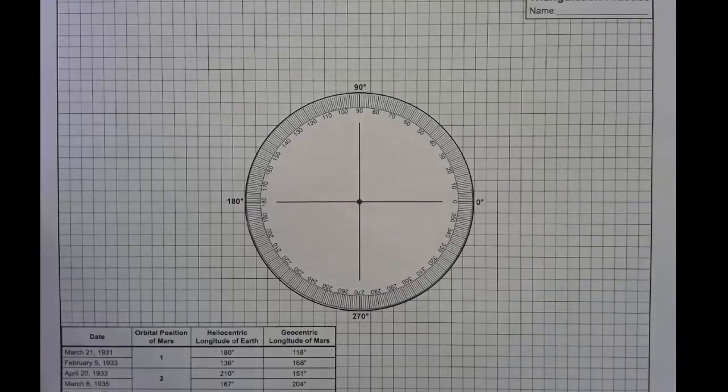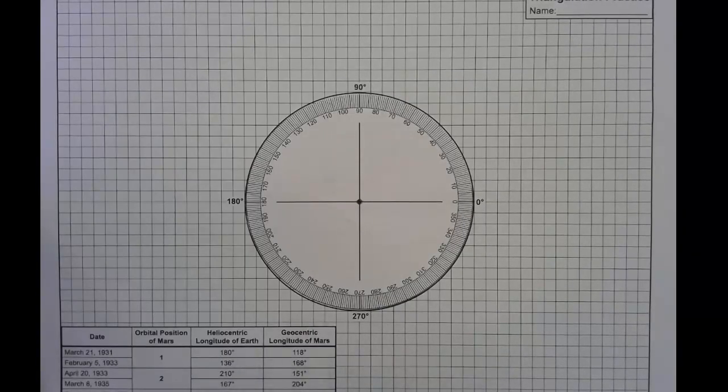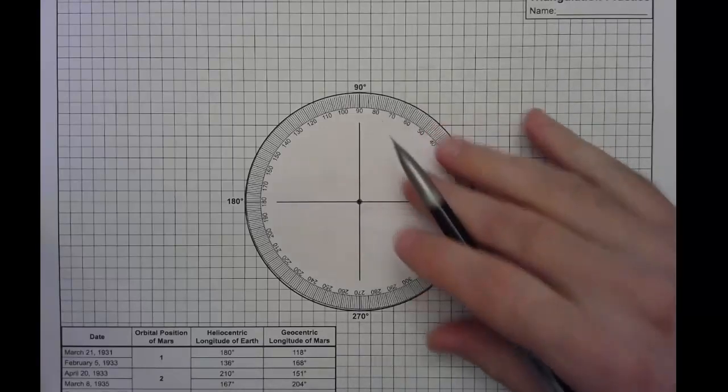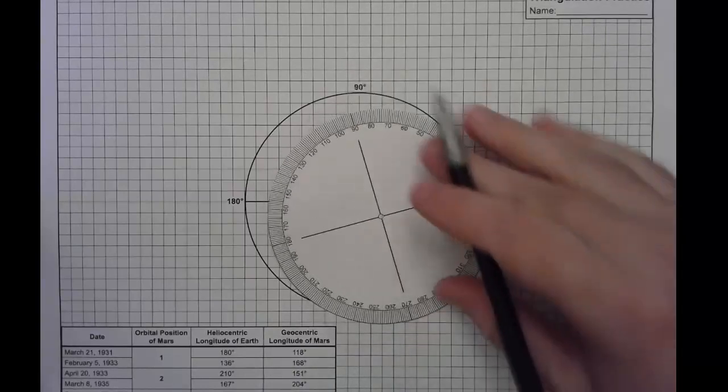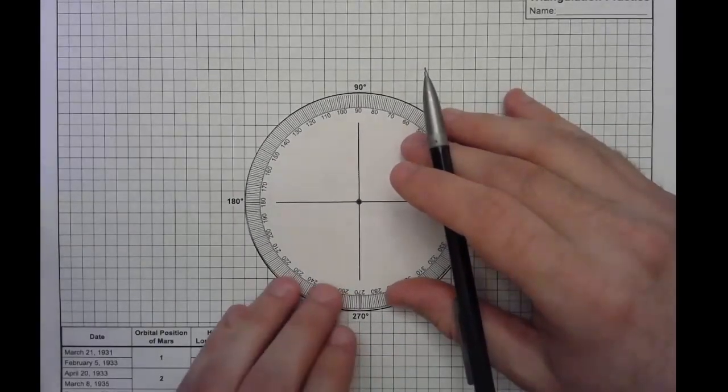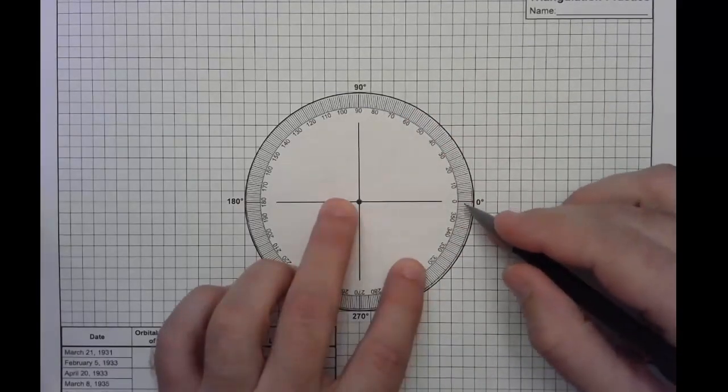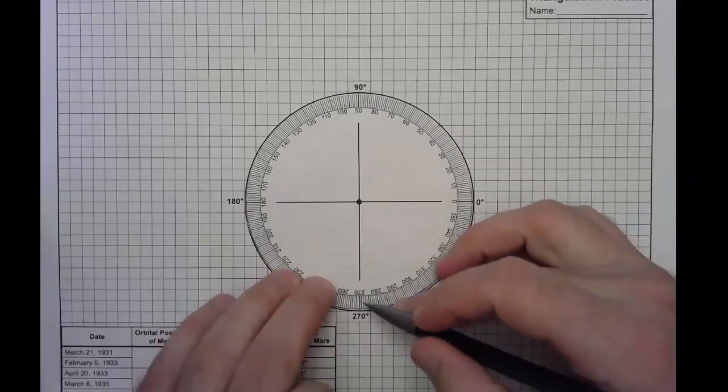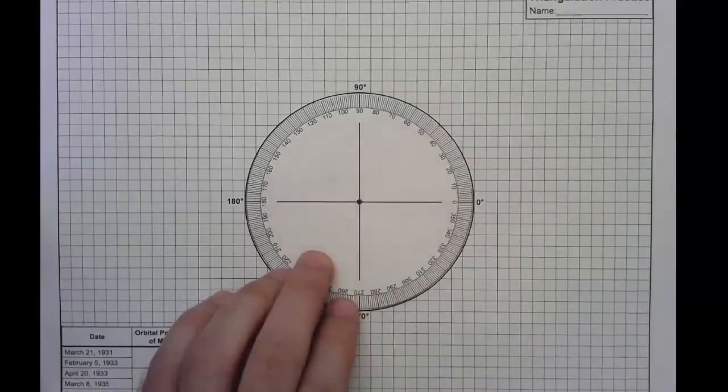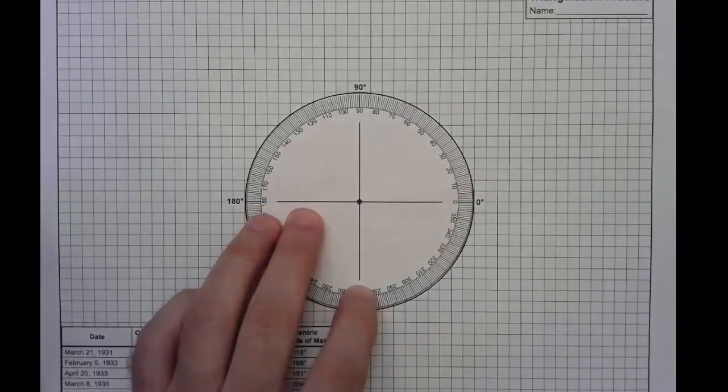So how does this work? We're first going to plot orbital position of Mars 1, and we're going to plot the heliocentric longitudes first. First thing we need to do, because this is heliocentric, that means Sun-centered, we're going to take our 360-degree protractor and center it on the Sun. We're just going to check to make sure that it's registered correctly. Zero lines up with zero. Nineties with 90. 270 with 270. And then 180 is on 180. That's our first step.